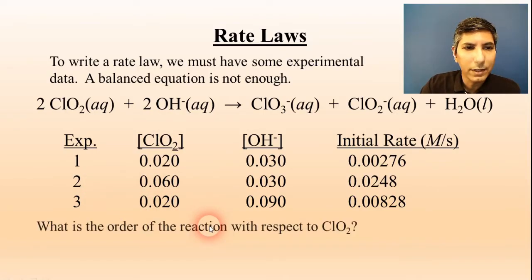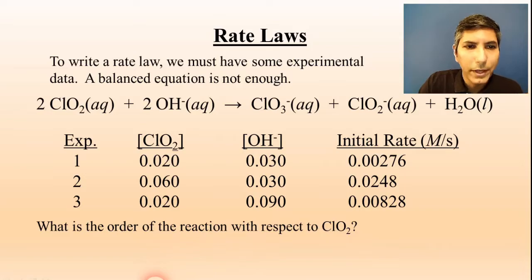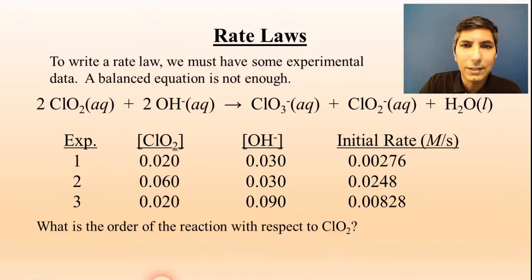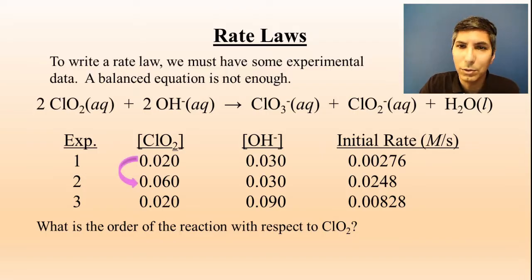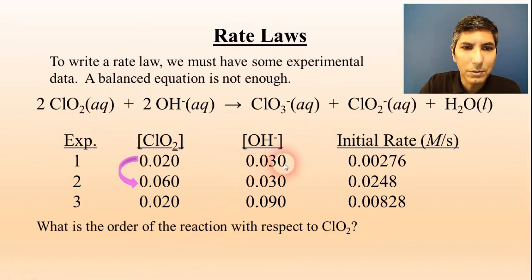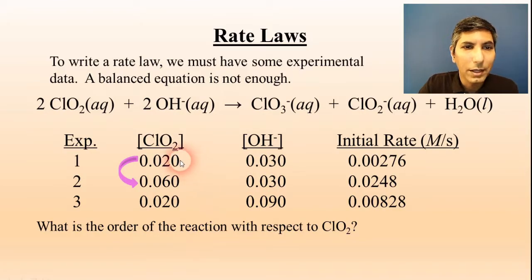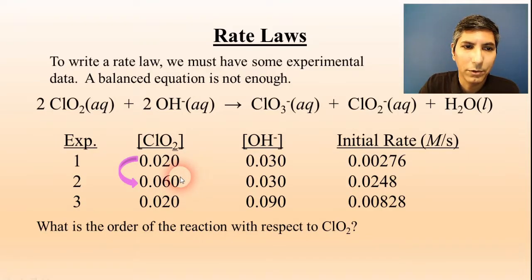If we want to find the order of the reaction with respect to chlorine dioxide, we have to find two experiments where chlorine dioxide is the only concentration that's changing. I'm going to focus on experiments one and two, because the hydroxide concentration was held constant from experiment one to experiment two, while the concentration of chlorine dioxide was tripled.